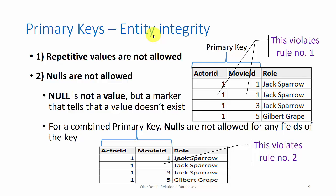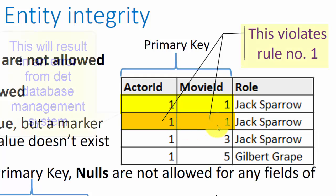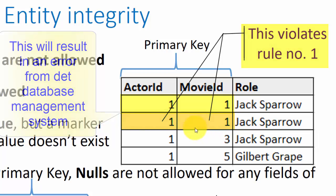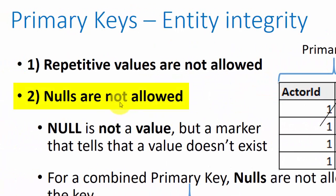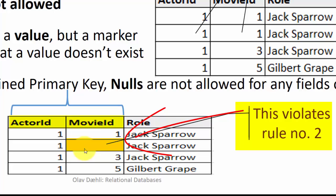For the primary key, the database management system will enforce something called entity integrity, which consists of two rules. The first rule is that repetitive values are not allowed for primary key fields. For example, a combined primary key of actor ID and movie ID cannot have two rows with identical values — this results in an error. The other rule is that null values are not allowed in any primary key fields. A null value in a primary key field is also a violation that results in an error.